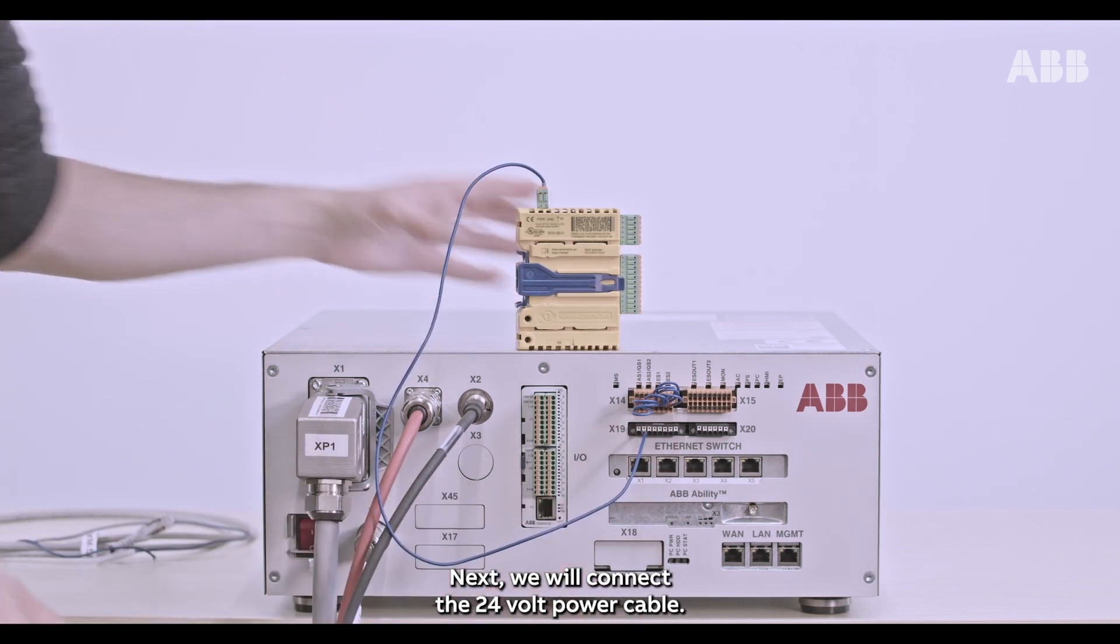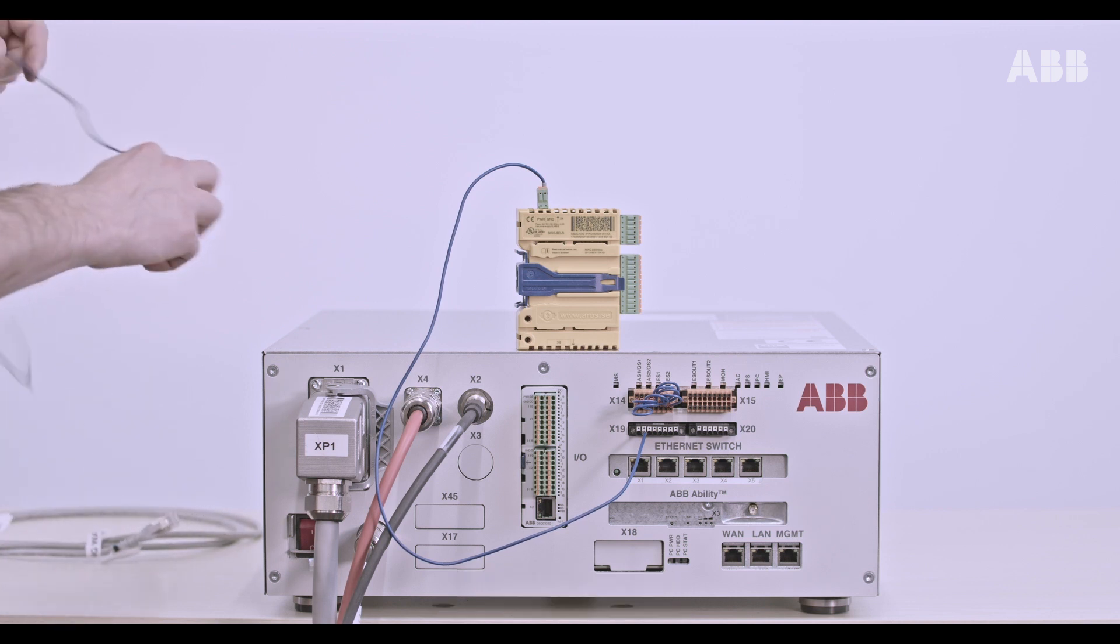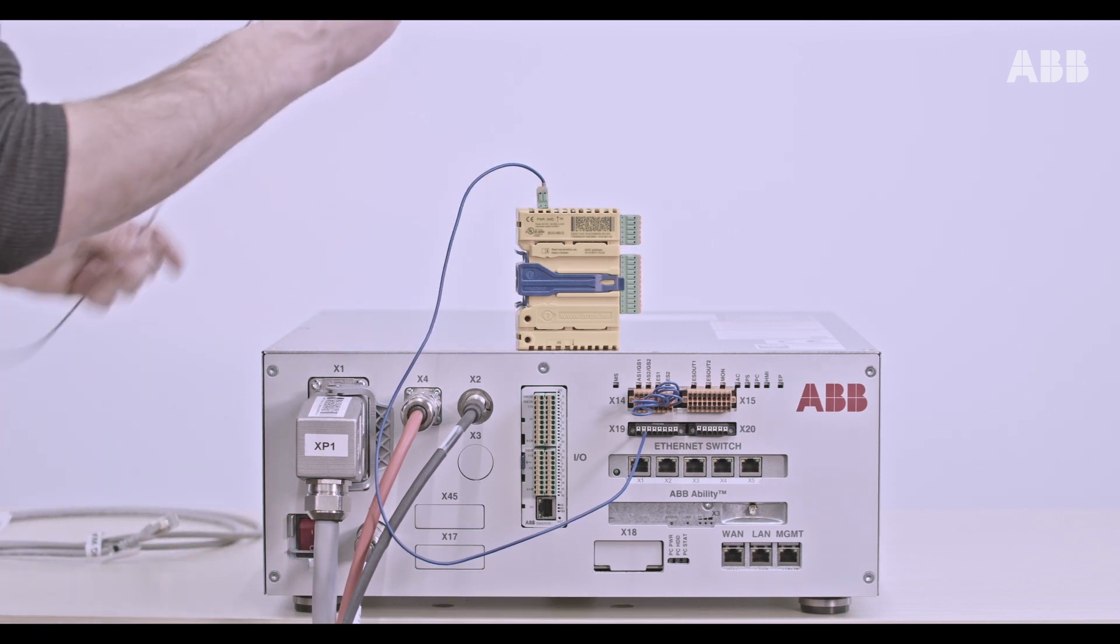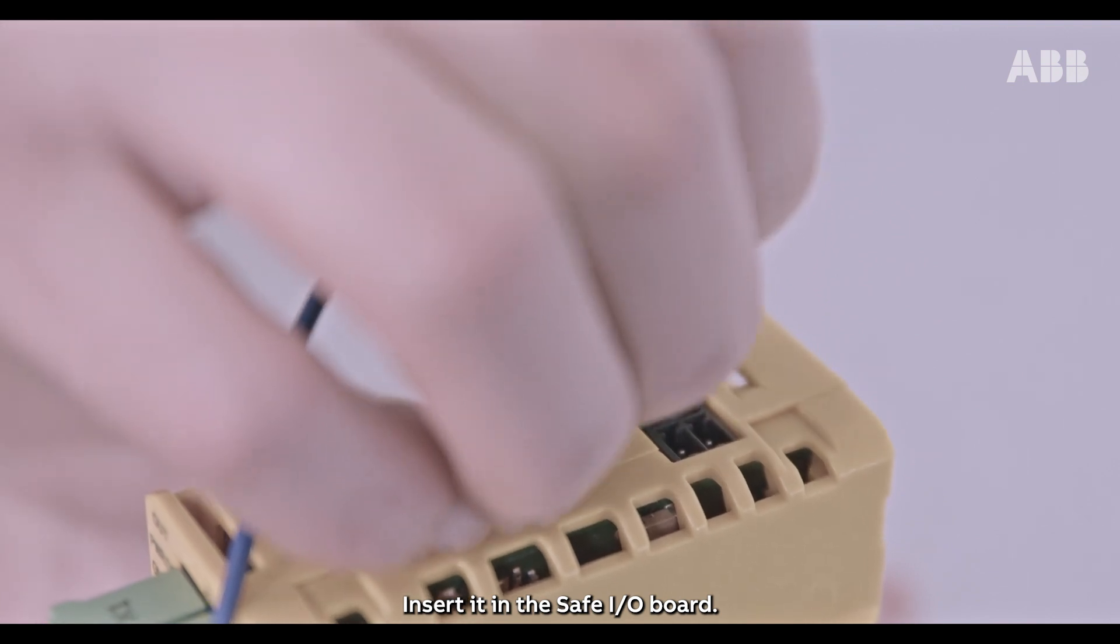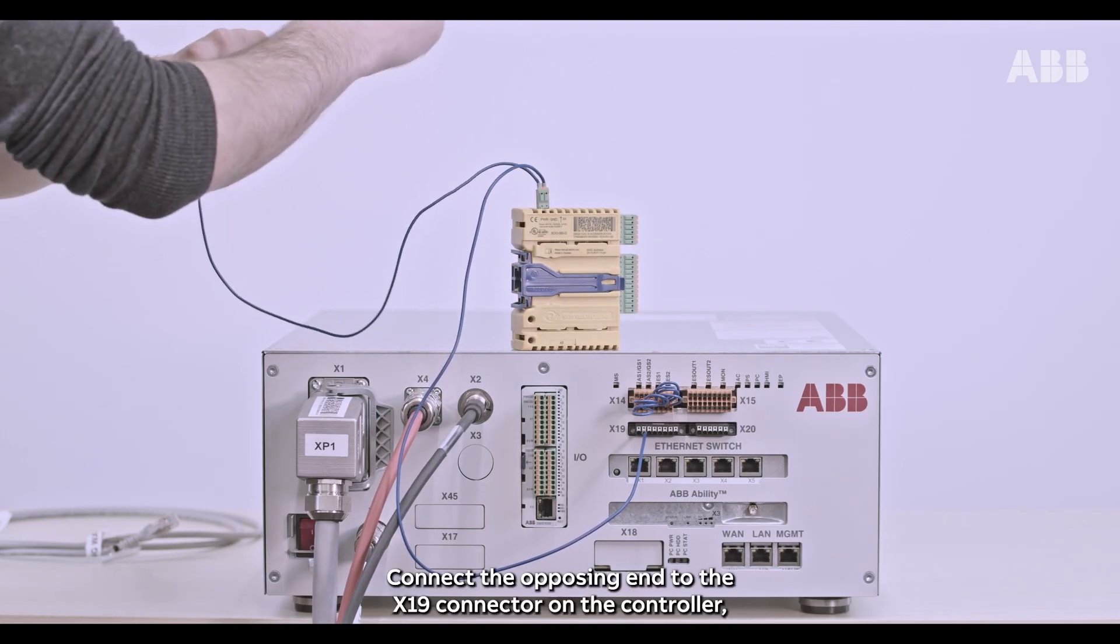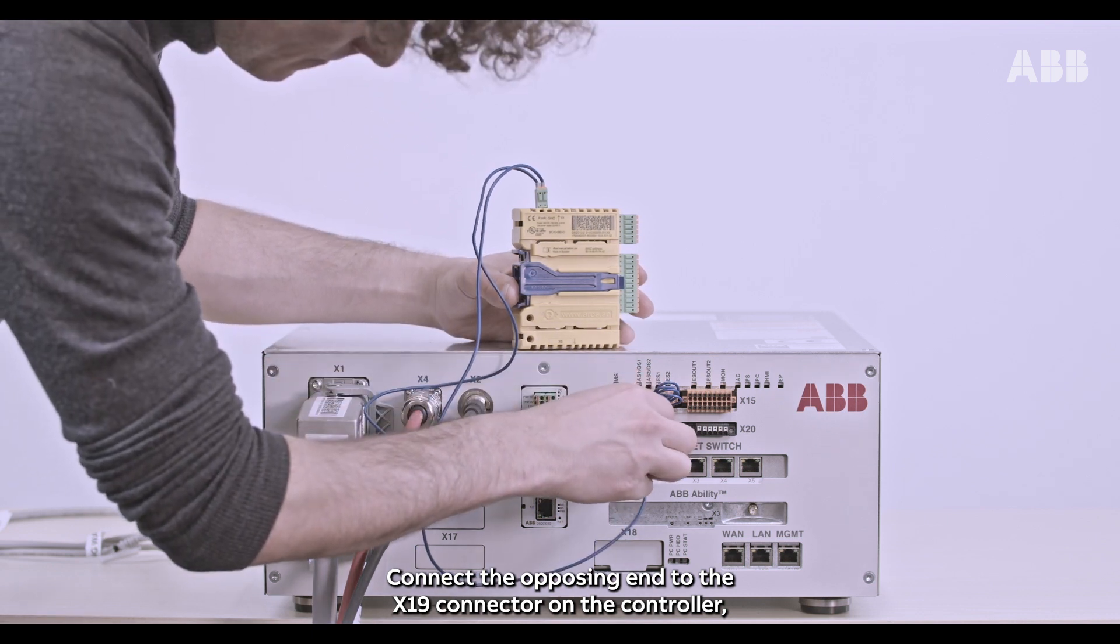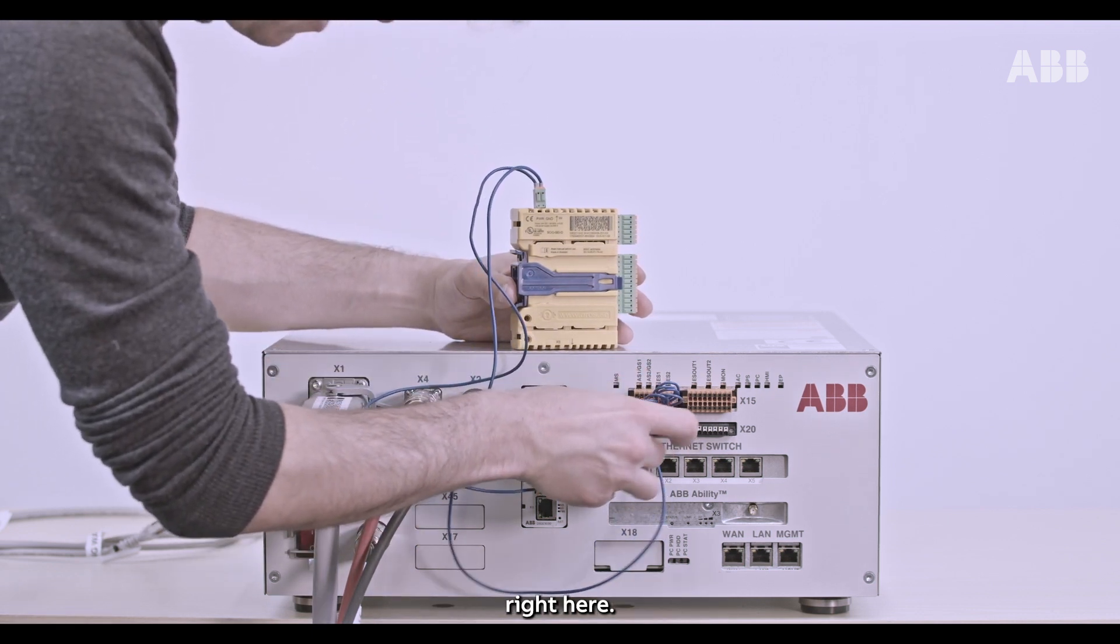Next, we will connect the 24V power cable. Insert it in the safe I.O. board. Connect the opposing end to the X19 connector on the controller, right here.